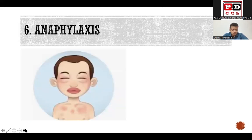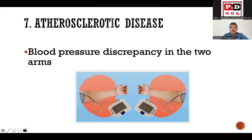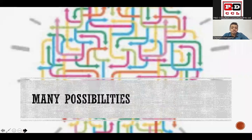Anaphylaxis is lower on the list but still possible, as this patient is on dual antiplatelets, statins, heparin, and multiple other drugs. Also consider blood pressure discrepancy between arms: if blood pressure has only been measured in the right arm and there's a large atherosclerotic plaque in the left subclavian artery, the left-arm reading may be low. Depending on which arm is measured, the blood pressure value may differ significantly.